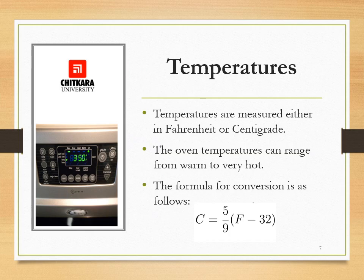Temperature. Temperatures are measured either in Fahrenheit or centigrade. The oven temperature can range from warm to very hot — newer ovens on the market are labeled in those descriptive terms rather than specific degrees. If you need to convert between Fahrenheit and centigrade, the formula is: C = (5/9) × (F − 32). This calculation is used to convert Fahrenheit to centigrade.